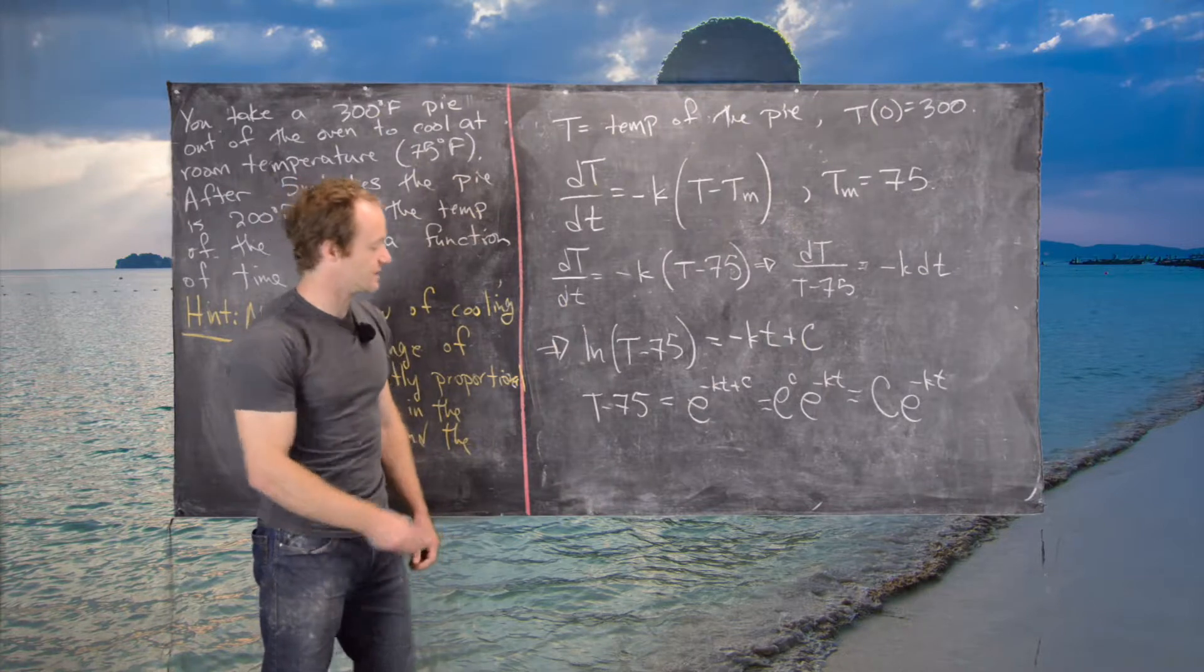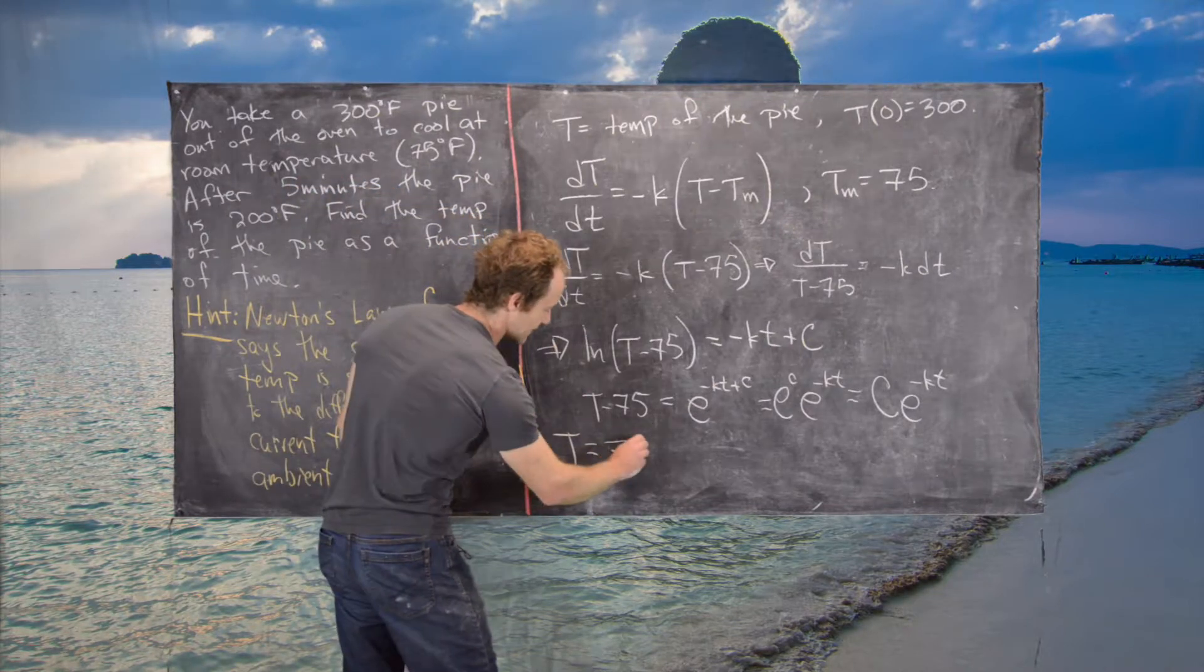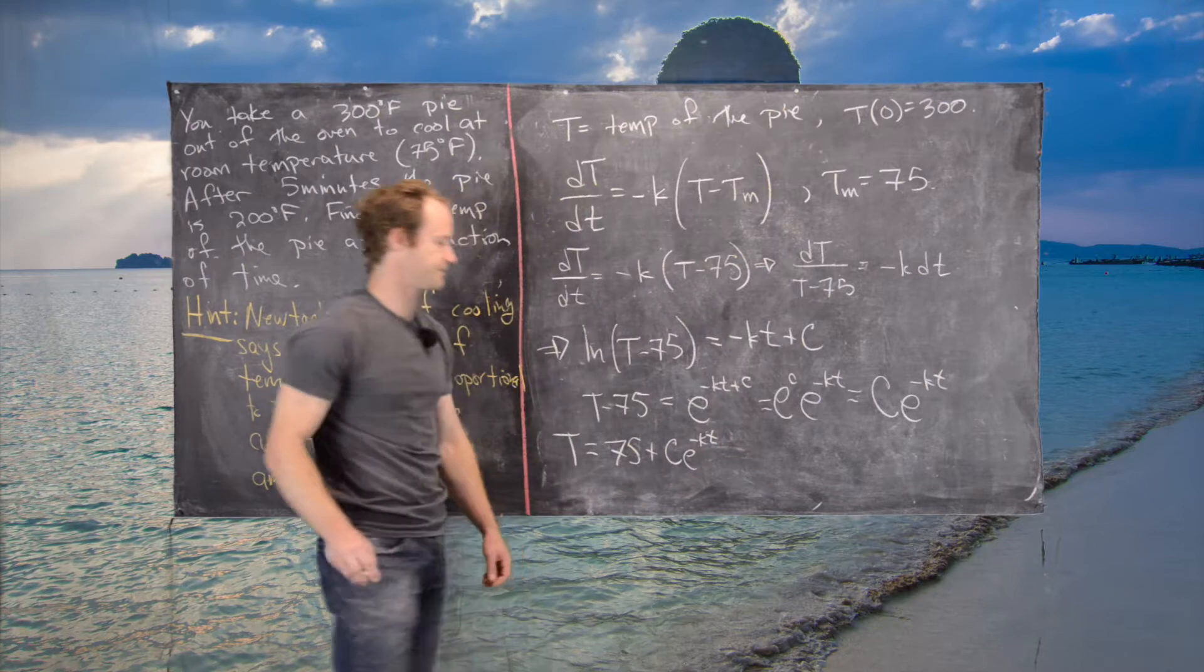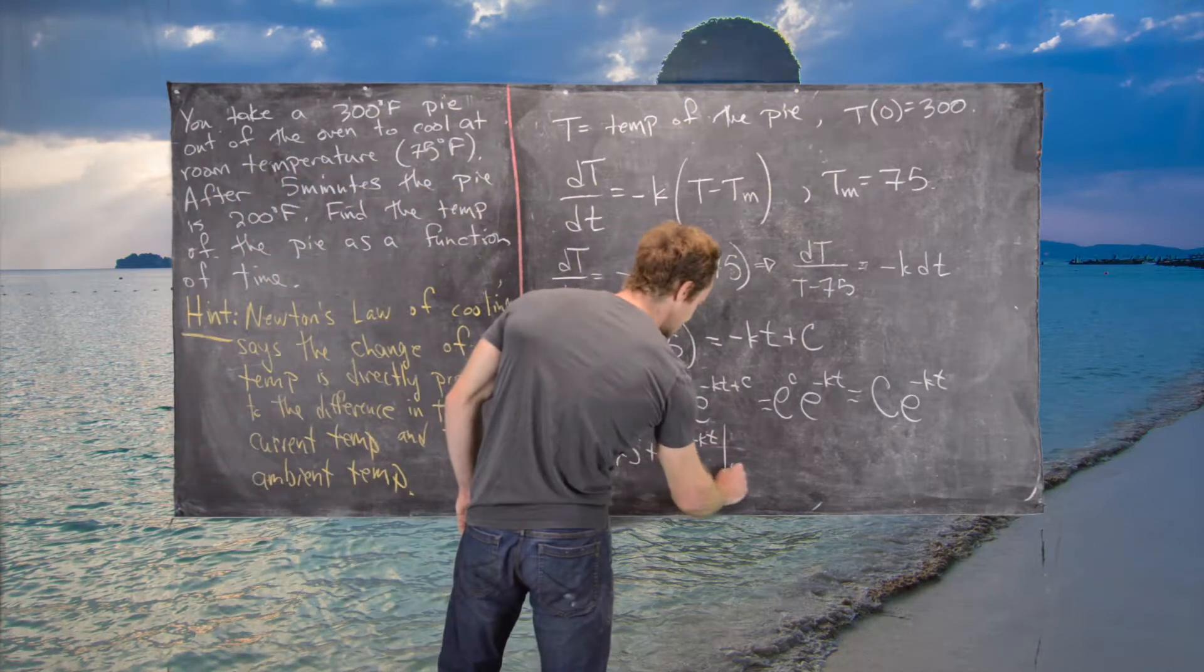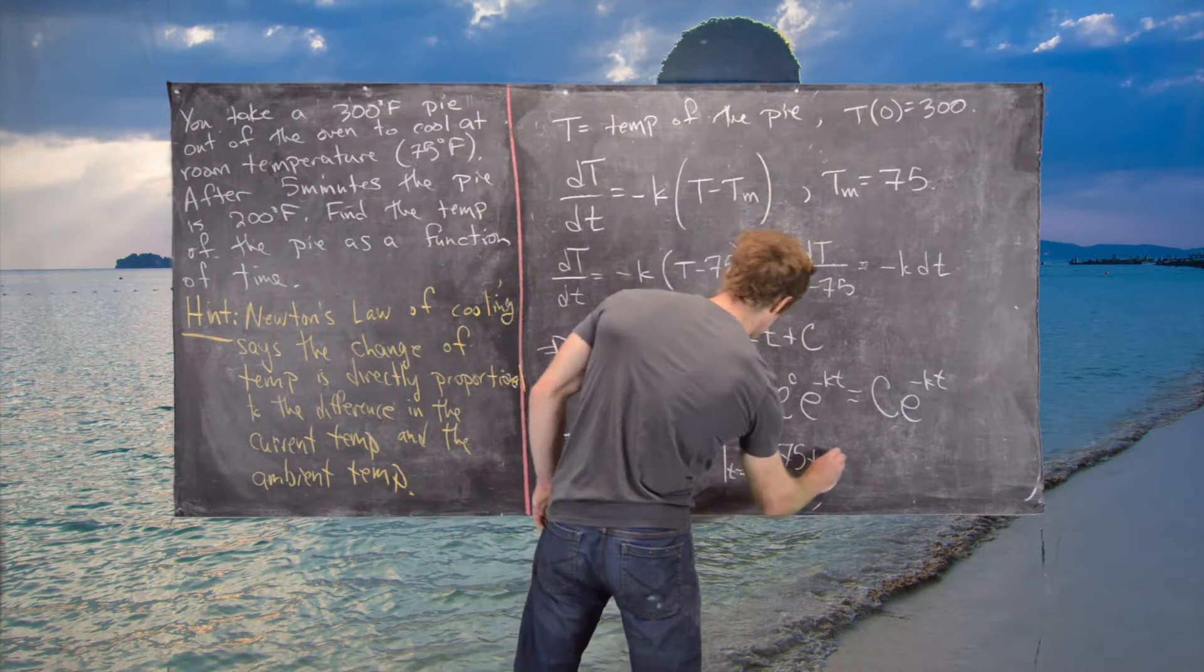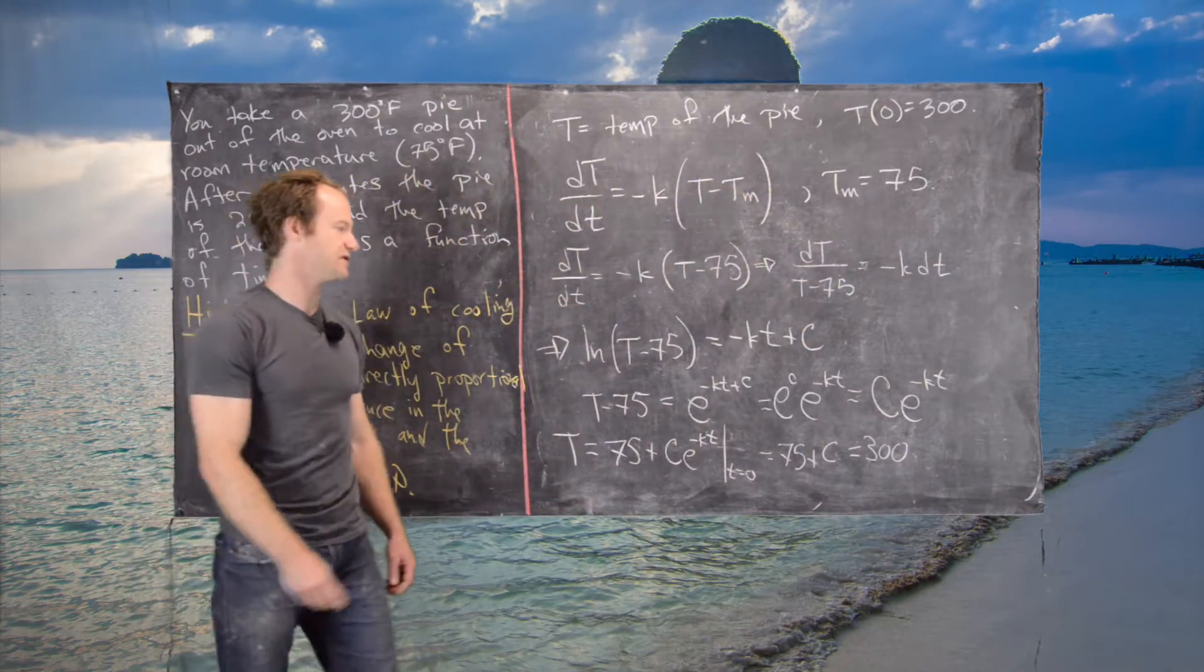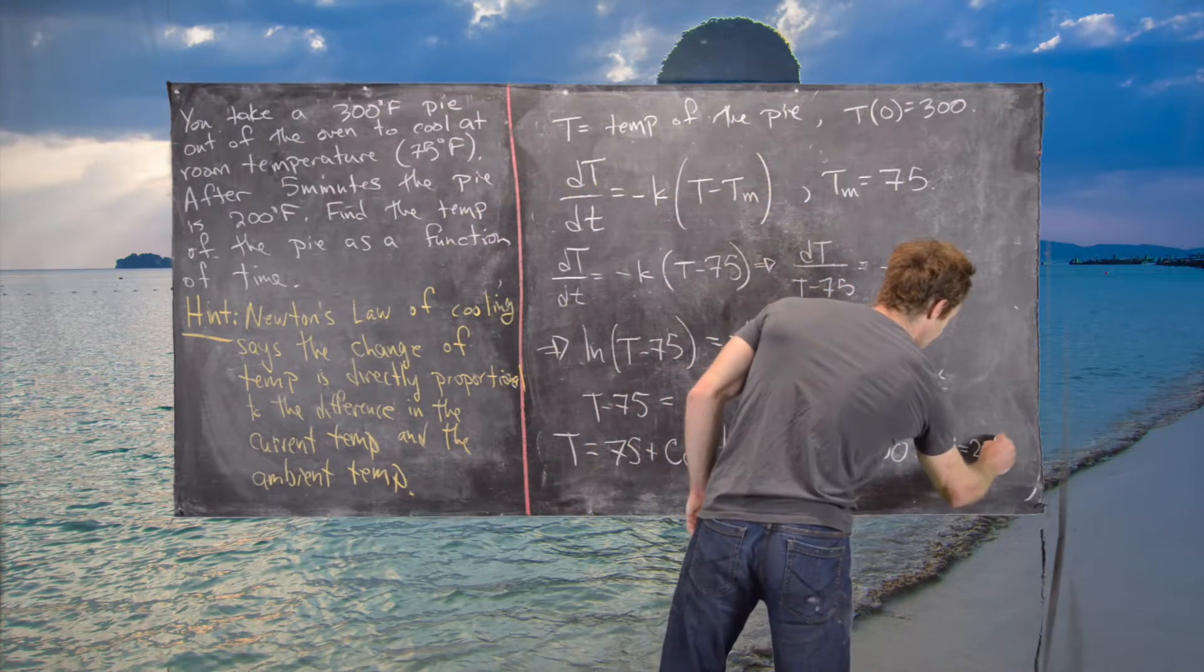Now we can write T = 75 + Ce^(-Kt). We can impose our initial condition: if we set t = 0, we get 75 + C = 300, which tells us that C = 225.